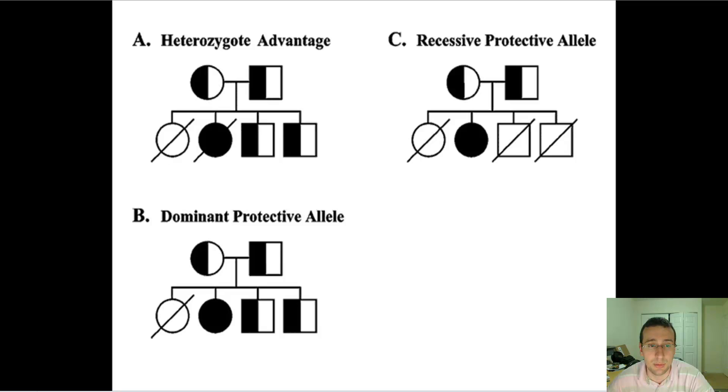You would think, for example, the sickle cell gene would be a bad thing, but in certain environments it actually gave an advantage. So that means that selection pressure is important to see whether or not it's deleterious or advantageous.